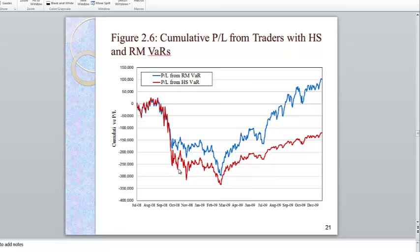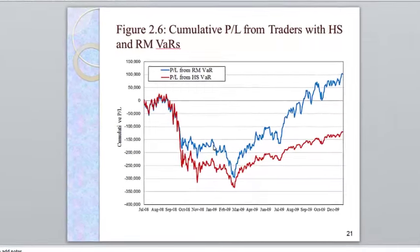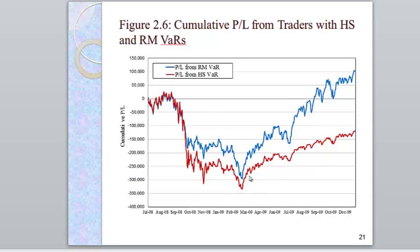When things calm down after September 2008, January 2009, value at risk goes down, so he should be able to make more money. That is true under the risk metrics model, the blue line, so he starts making money. However, under historical simulation value at risk, he's still restricted. He still has that cap that he cannot invest.